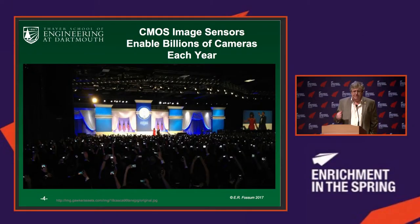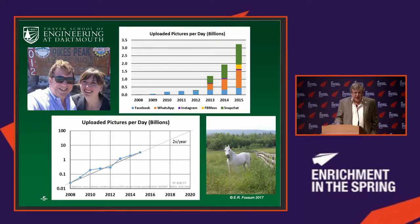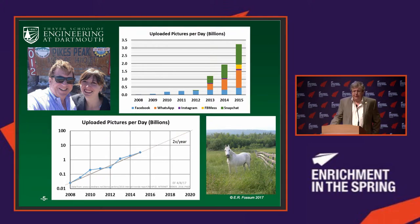CMOS technology enables billions of cameras every year. At any event you see everyone holding up their cell phone cameras. Just recently I found that there are about six billion pictures uploaded to the internet every day. If you plot that published data on a log scale as a function of year, the rate of pictures being uploaded is doubling about every year. If that trend continues, by 2020 there'll be a hundred billion photos uploaded every day — which is completely mind-boggling.